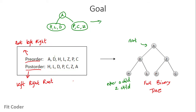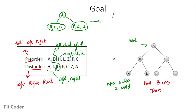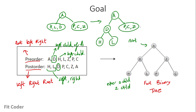Now we have to do this for each of the nodes. If we pick D, which is the left child of A, we find in the post-order traversal that H and L are the left and right children of D. H is the left child and L is the right child. Similarly, we can break the right subtree PCZ, and we will obtain the full binary tree. Based on this property, we will recursively create this tree from the given traversals.